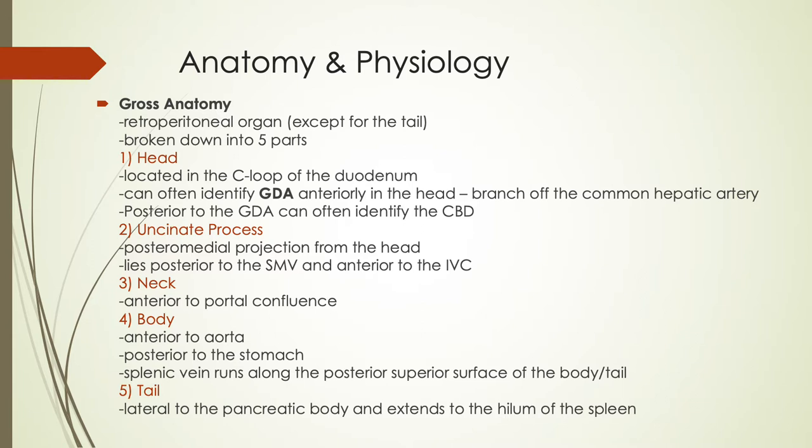Remember, the pancreas is a retroperitoneal organ other than the tail, but when we talk about it as a whole, we talk about it as being part of the retroperitoneum. We break the pancreas up into five different parts: the head, the uncinate process, the neck, the body, and the tail. When I have a diagram of the pancreas, I will try and point those out to you and on ultrasound as well.